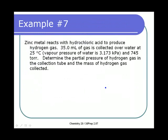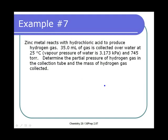Final example: zinc reacts with hydrochloric acid producing hydrogen gas. 35 mL of gas are collected over water at 25°C; the vapor pressure of water at 25°C is 3.173 kPa and total pressure was 745 torr. We want the partial pressure of hydrogen gas and the mass of hydrogen collected. Based on Dalton's Law: total pressure = pressure of H₂ + pressure of water vapor.